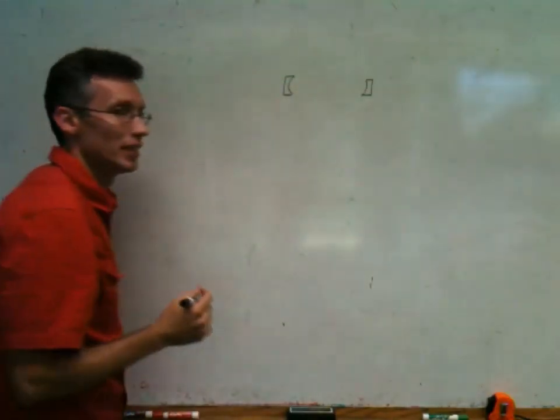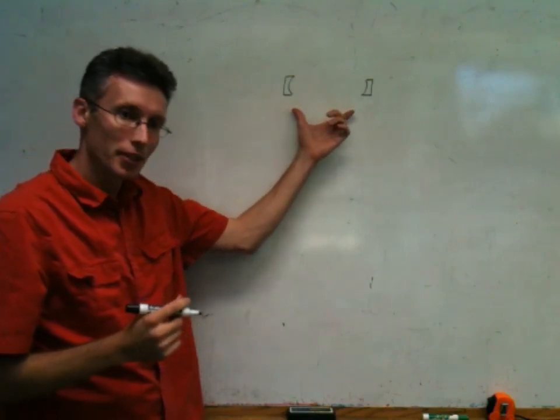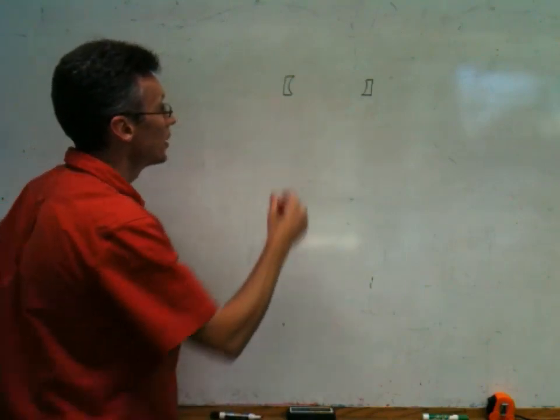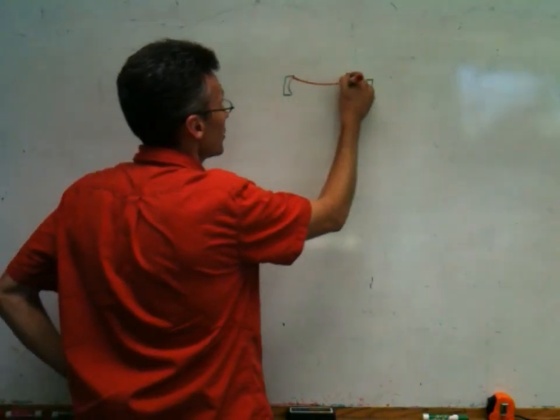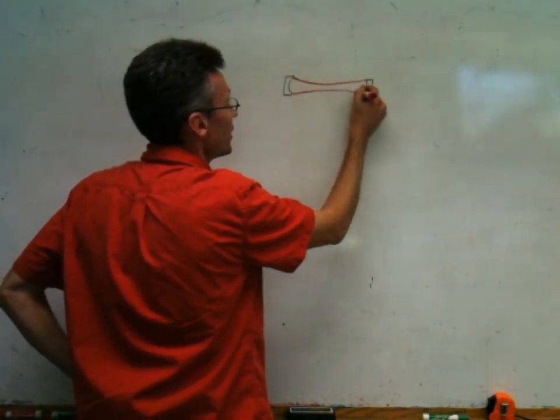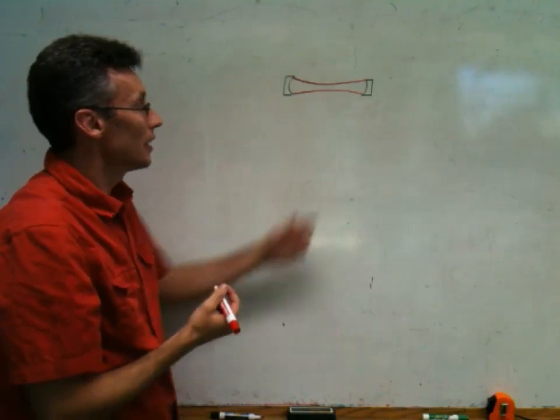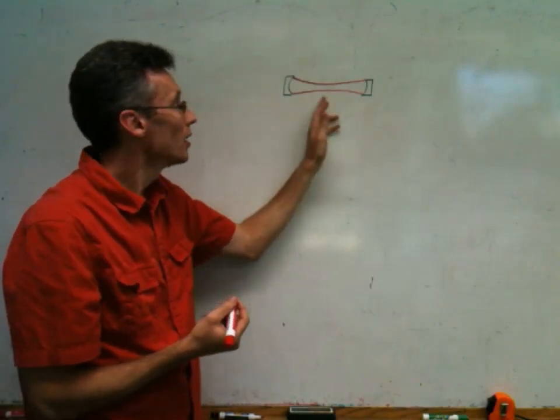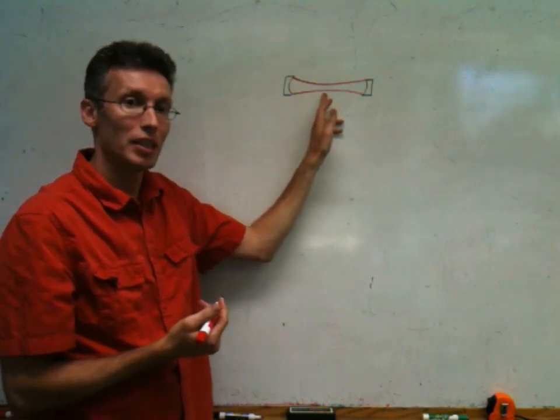When you set up a Fabry-Perot cavity, we have curved mirrors, and the curvature of those mirrors defines an eigenmode, a particular shape for the Gaussian beam that can resonate inside that cavity. If this is a symmetric cavity, such as both mirrors are identical, we would expect the waist of that cavity to be in the center.